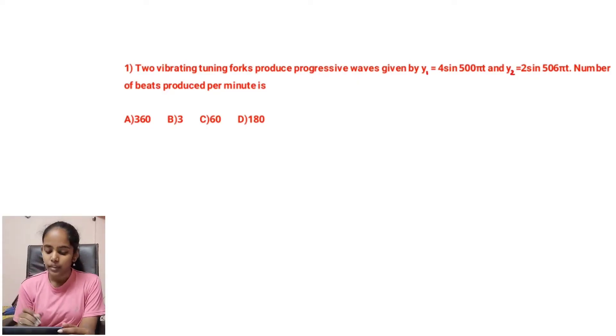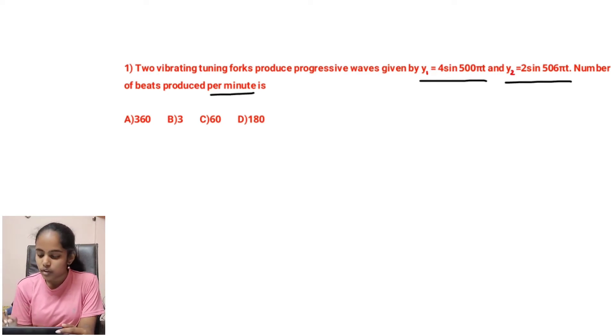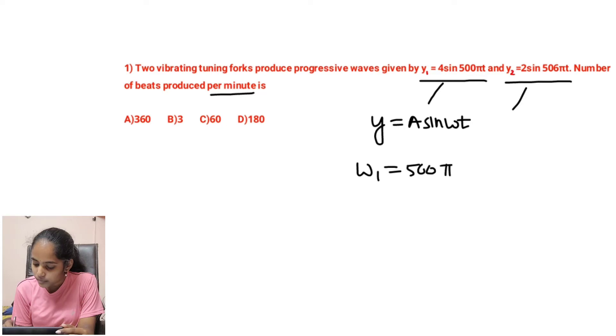Now we will solve the first question. Two vibrating tuning forks produce progressive waves given by y₁ = 4 sin 500πt and y₂ = 2 sin 506πt. Number of beats produced per minute is asked. So if we compare these equations with the standard equation y = a sin ωt, then ω₁ becomes 500π and ω₂ becomes 506π.